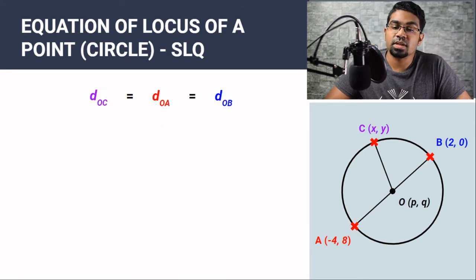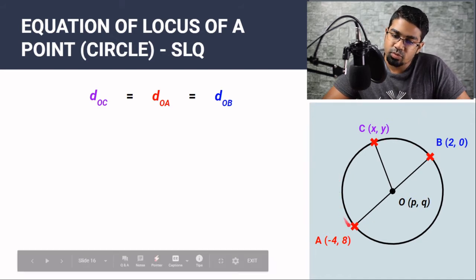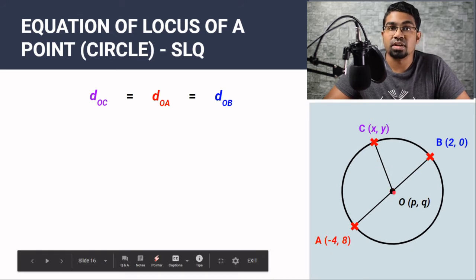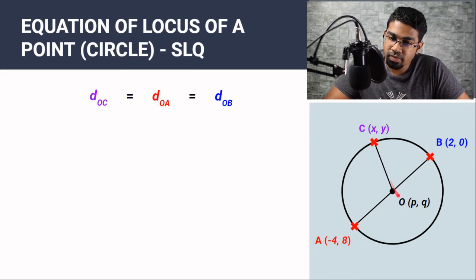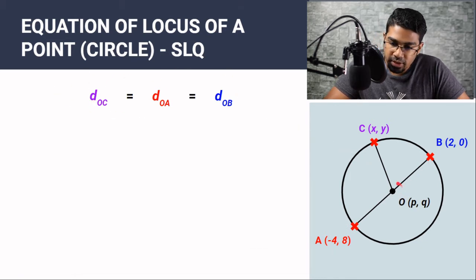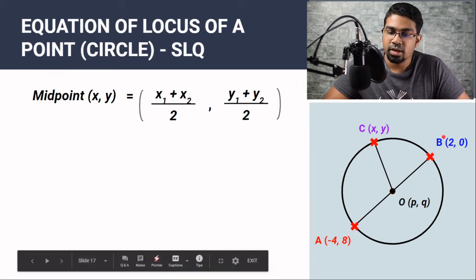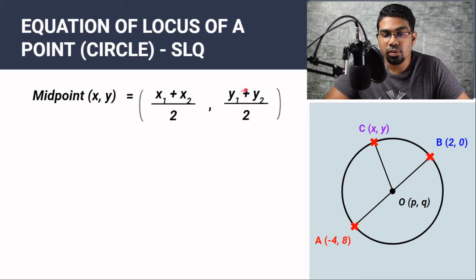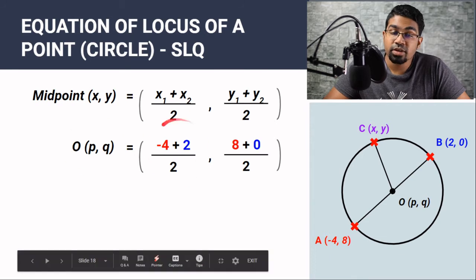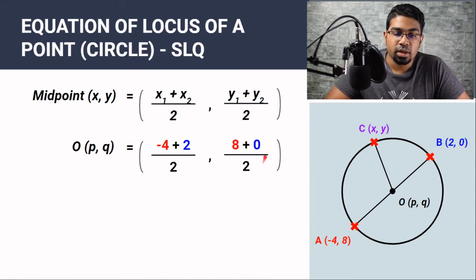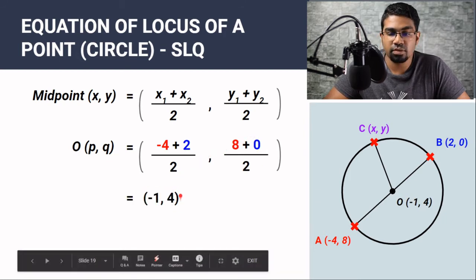The second method uses the concept that point C, moving to form the locus, will always have the same distance to the center, because it is a circle — it will always be equidistant to the center. So distance OC always equals distance OA and distance OB. To find these distances, we first need to find the coordinate of the center of the circle using the midpoint formula, since the center is exactly in the middle of the diameter. The midpoint is ((x1 + x2)/2, (y1 + y2)/2), giving us O = (−1, 4).